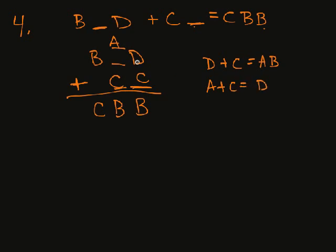So D plus C gets me another AB. So I carry the A. A plus B is C. It is indeed. So this is correct. The missing digits are both C's.